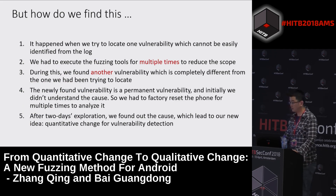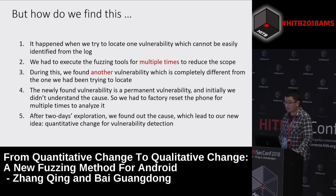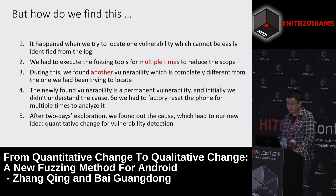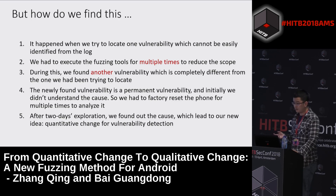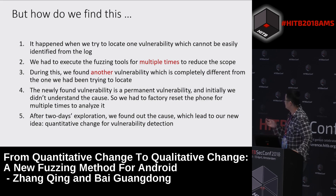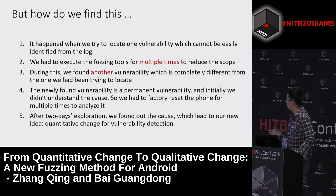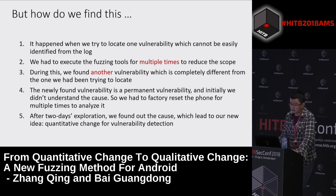You may be interested in how we found this. It happened when we tried to look at a vulnerability that couldn't be easily identified from the log, so we had to execute the fuzzing tools multiple times to reduce scope. During this, we found another vulnerability completely different from the one we were looking for. The newly found vulnerability was a permanent vulnerability. At first we didn't understand the cause, so we had to factory reset the device multiple times to analyze it. After further exploration, we found the cause, which is related to our new idea: quantitative change for vulnerability detection.